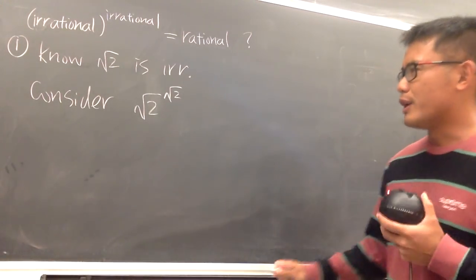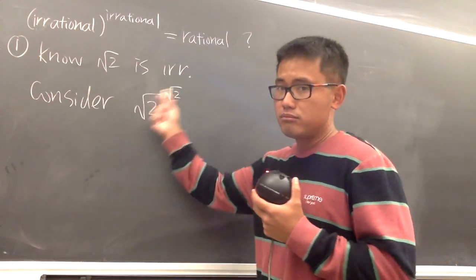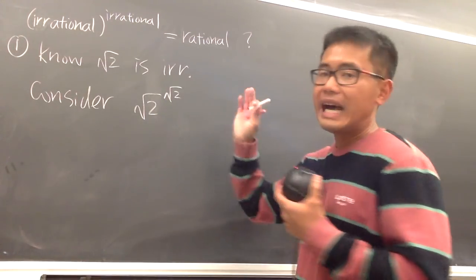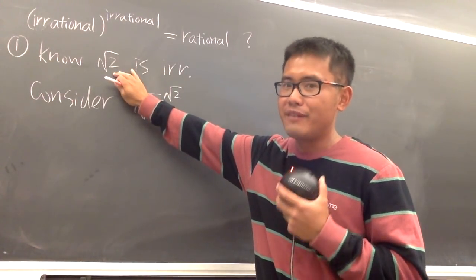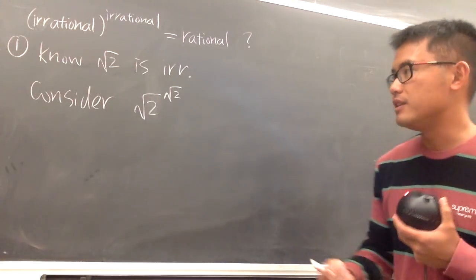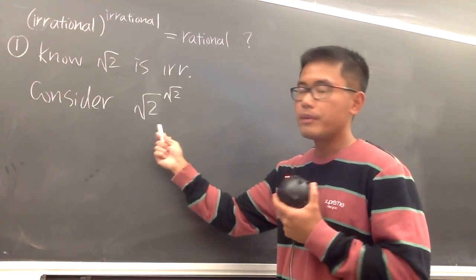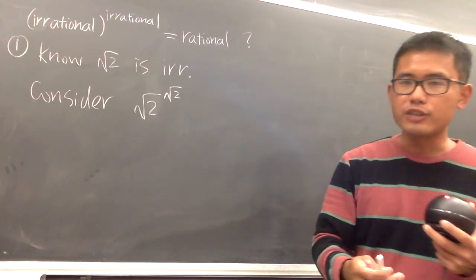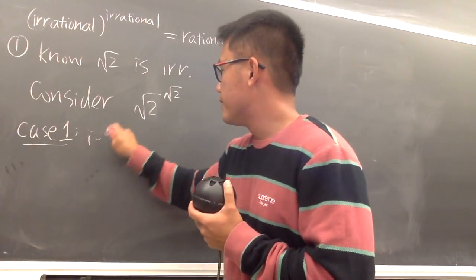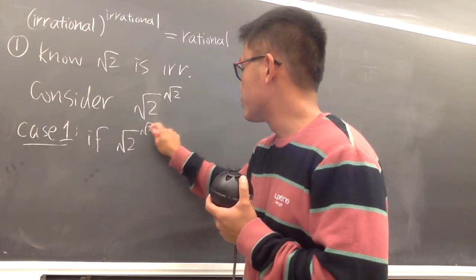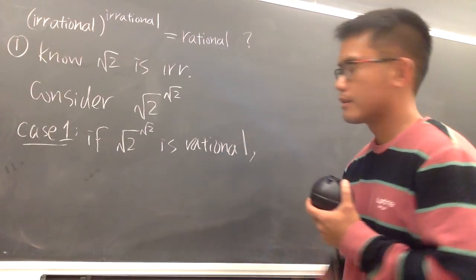I know it looks really crazy, but check this out. I don't know if this is rational or irrational, because I haven't done the proof of this yet. And this is the only one we have at the moment. Now, a real number is either rational or irrational. Case 1: if this number — square root of 2 raised to the square root of 2 — if this is rational already, then what?